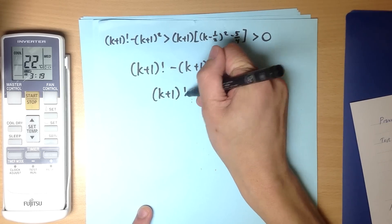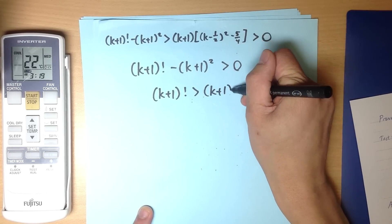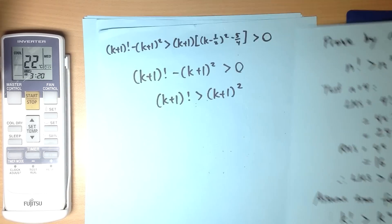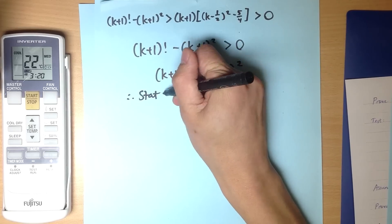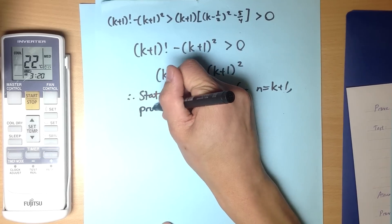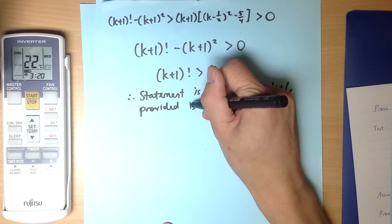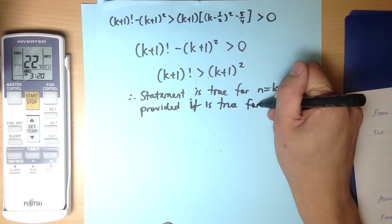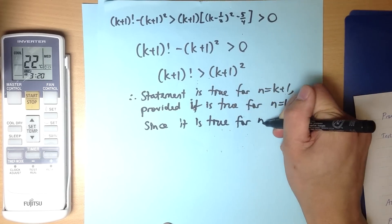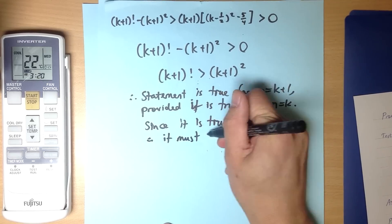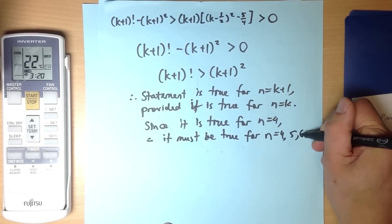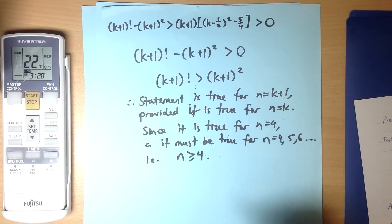So now I can use that and bring this guy back over the other side, which is the statement I was trying to prove all the way back a couple of pages ago. This is the statement for n equals k+1. So I can say therefore statement is true for n equals k+1, provided it's true for n equals k, that was our assumption. So since it is true for n equals 4, therefore it must be true for all the k+1s after that: 4, 5, 6 and so on, i.e. n is greater than or equal to 4, and there's the proof.